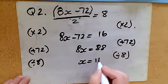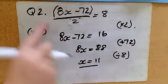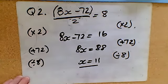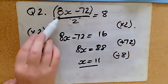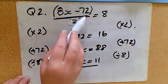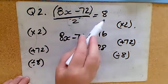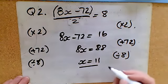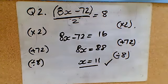So x is 11. And again, if we just quickly pop that into the equation we started with, that would be 88. 8 times 11 is 88, take away 72 which is 16, 16 divided by 2 gives us the answer of 8. So we can always be sure we've got the correct answer.